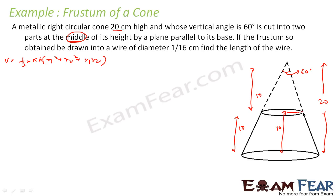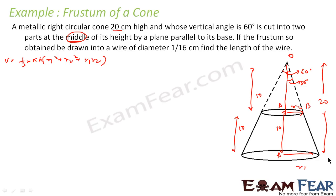We know the height but we don't yet know the values of r1 and r2. So first we have to find r1 and r2. Since the vertical angle is 60 degrees, the half-angle is 30 degrees. We can form triangles from the cone's geometry — triangle OA'B' for the smaller radius and triangle OAB for the larger radius.